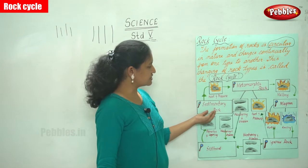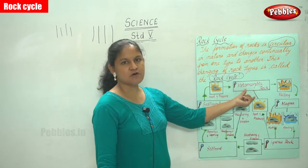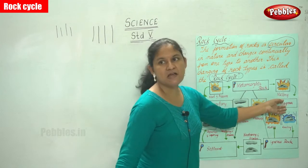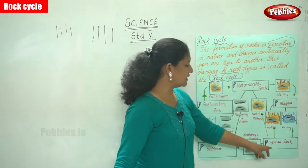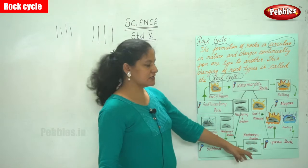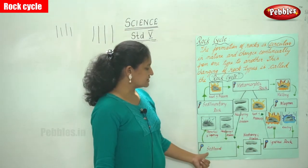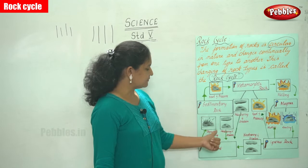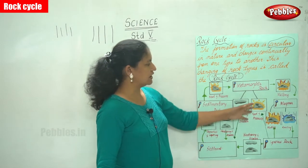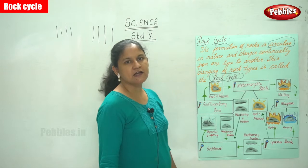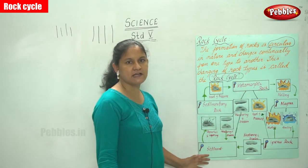To summarize the rock cycle: sedimentary rock under heat and pressure becomes metamorphic rock, which on melting becomes magma, which on cooling becomes igneous rock. Weathering and erosion then produce sediment, and through deposition, layering, and further heat and pressure, the cycle continues.